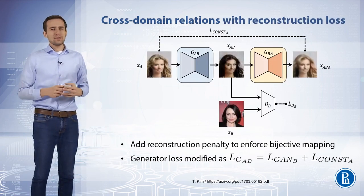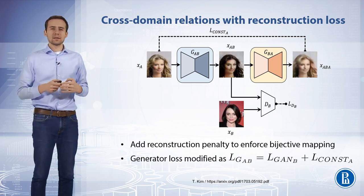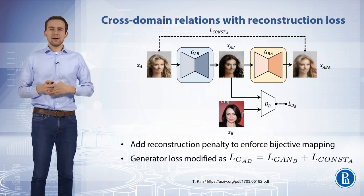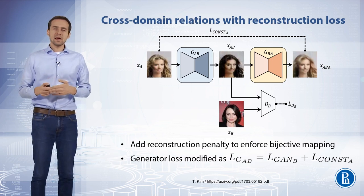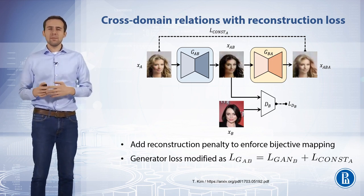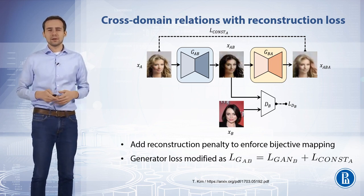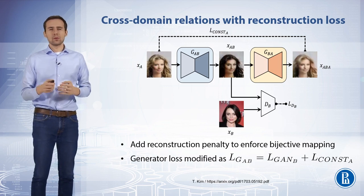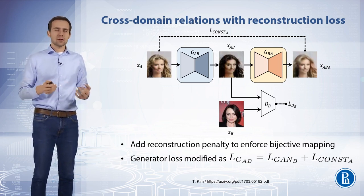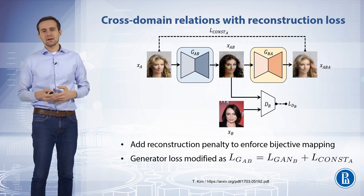One way of improving the generator might be introducing an auxiliary loss — making the mapping between domains A and B more bijective. A generator GAB translates an input image XA from domain A into XAB in domain B. The generated image is then translated back into domain A, image XABA, to match the original input image. Various forms of distance functions, such as mean squared error, cosine distance, and hinge loss, can be used as the reconstruction loss. Effectively, we reconstruct XA via XABA.